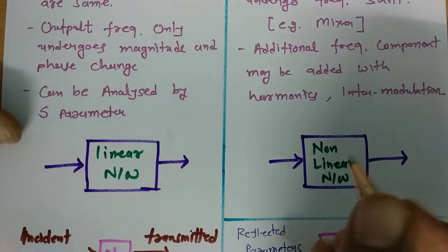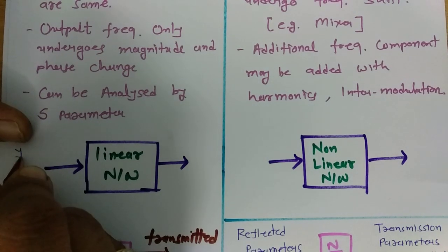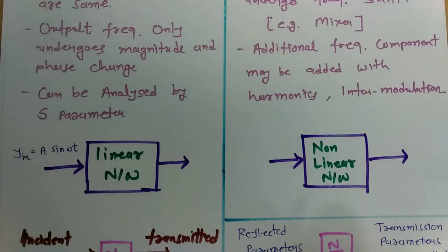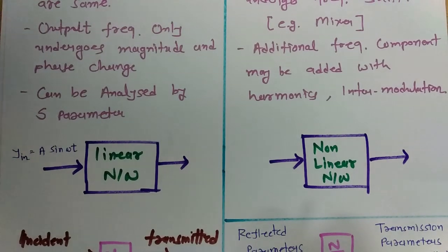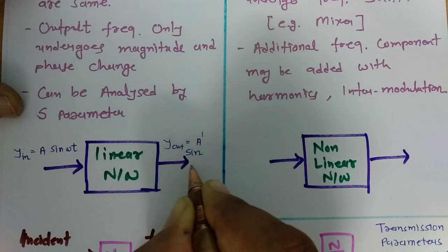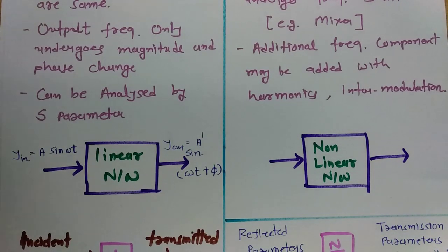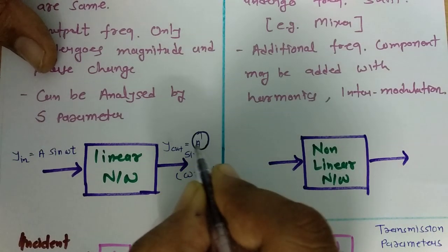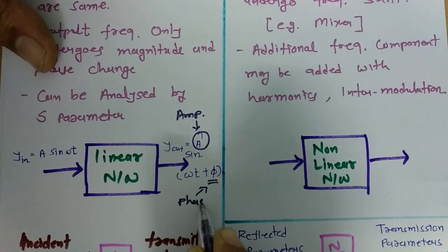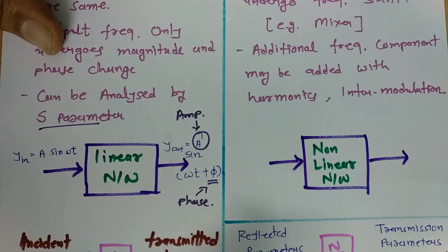Let us understand that with some basic examples. For a linear network, if my input is V_in = A sin(ωt), then my output V_out will be A' sin(ωt + φ). One can clearly see the output amplitude changes to A' and there is a phase change φ — change in amplitude and change in phase. This is the case for a linear network, and this analysis can be done using scattering parameters.